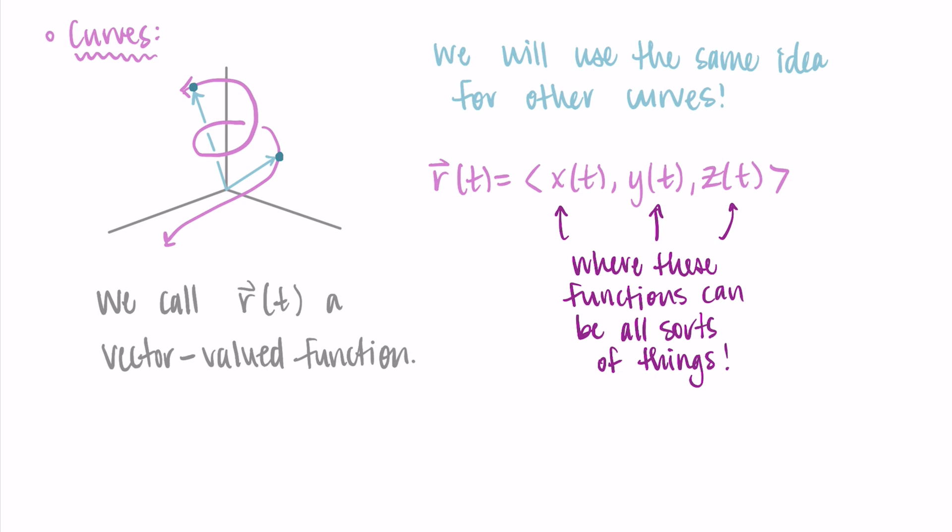So this is just to kind of reiterate some things about lines and really get you thinking about that parameter t and how we're sort of drawing out the curve or the line in space by looking at individual vectors that point to individual points and collecting them all together as our curve or our line.